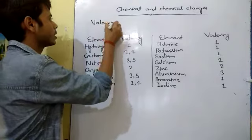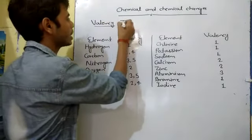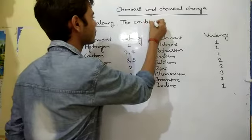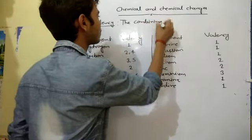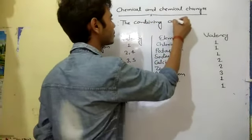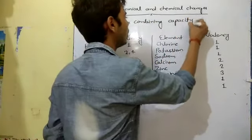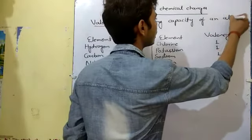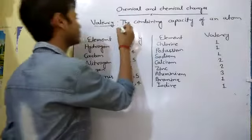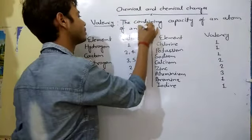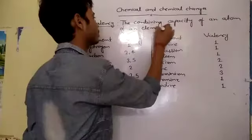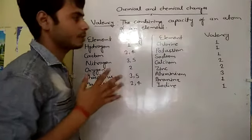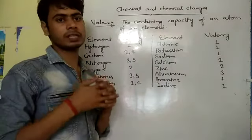Valency is the combining capacity of an atom of an element — that is known as the valency. Different types of elements show different types of valency.